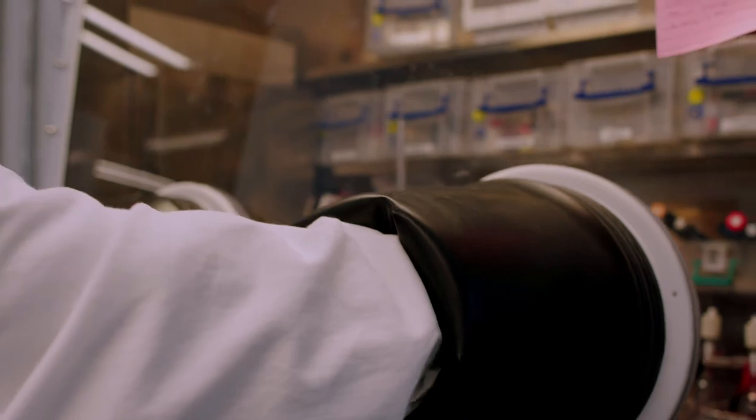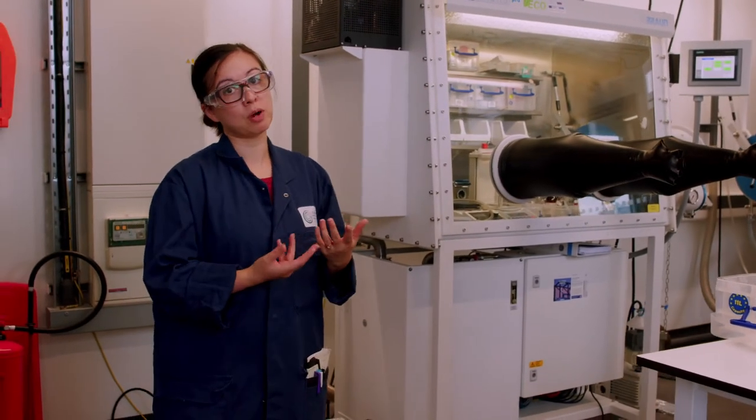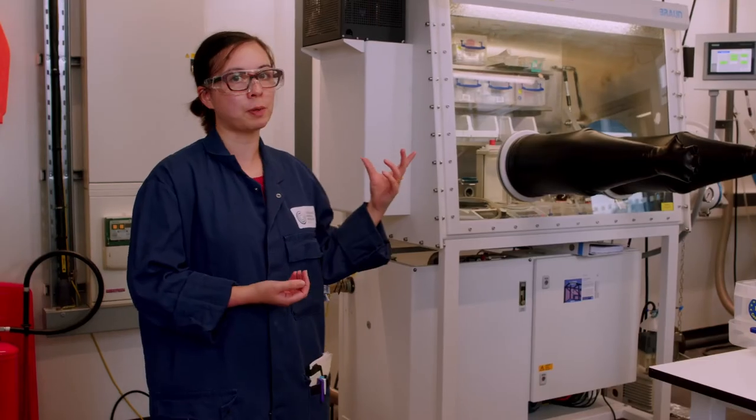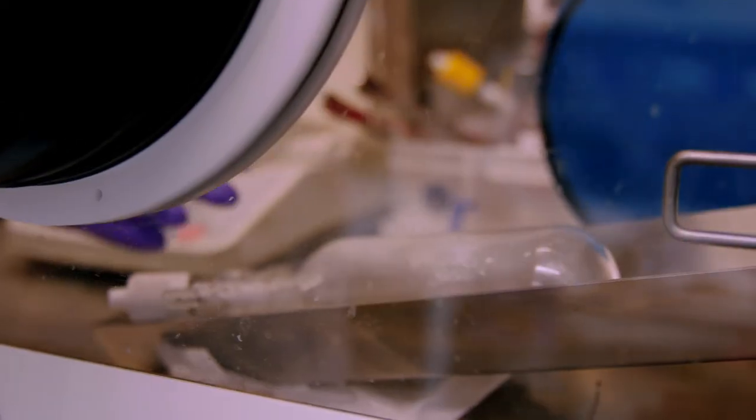So this is our air sensitive area. Here we have three glove boxes. They're all under argon and they enable everyone to work with chemicals that can't get exposed to oxygen. We use these as part of our polymer making or unmaking processes.